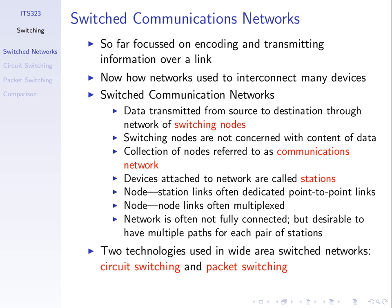In communication networks which use switching, we assume that those switching nodes are not concerned with what the data is that's being communicated from A to C. A wants to send a file to C — B doesn't care what the contents of that file is. It just treats it as some data. B's responsibility is just to get the data to the destination. Whether the data is a file, a request for a web page, or part of a voice call, from B's perspective it doesn't care — it treats them all the same. It's just data. The switching nodes are not concerned with the content of the data. Of course, the source and destination are.